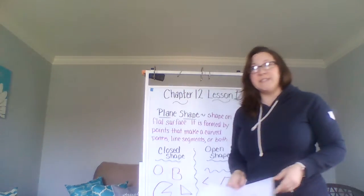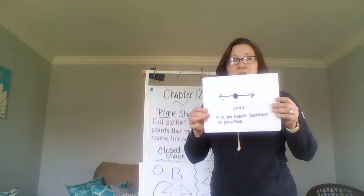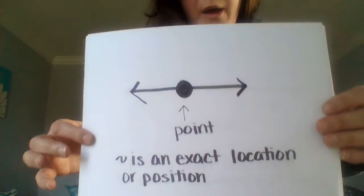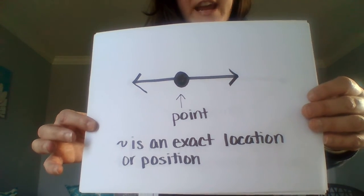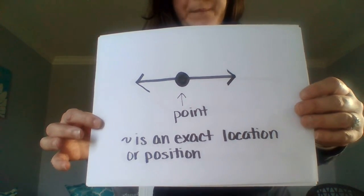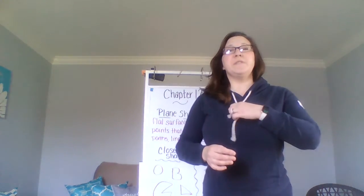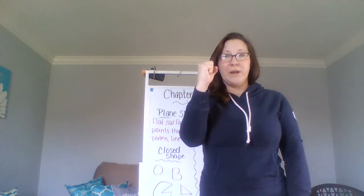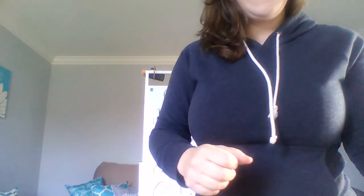The first vocabulary word is point. A point is an exact location or position. We're going to play a little game of Simon Says later on, so everybody give me a fist to show me your point. Great job — that's point.